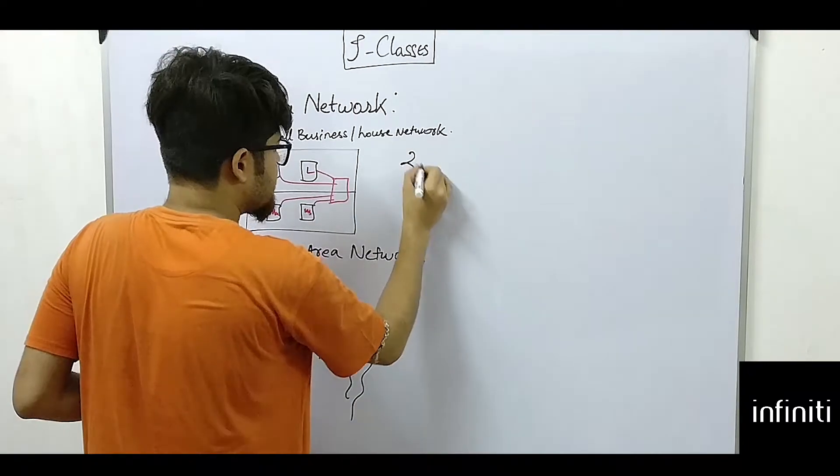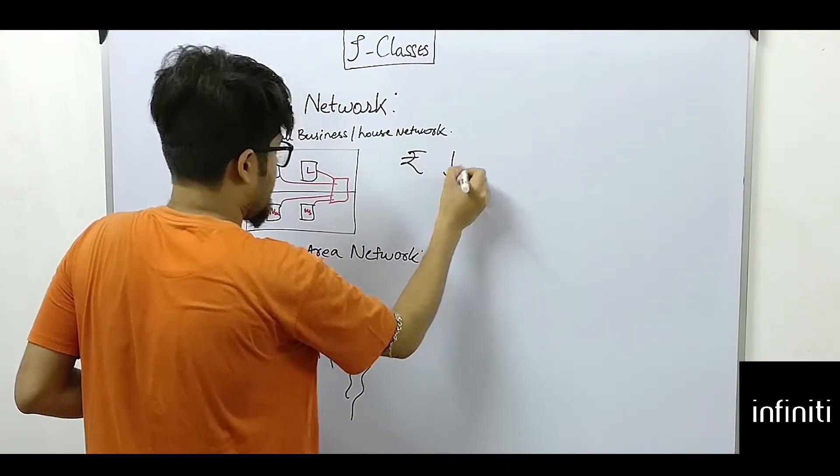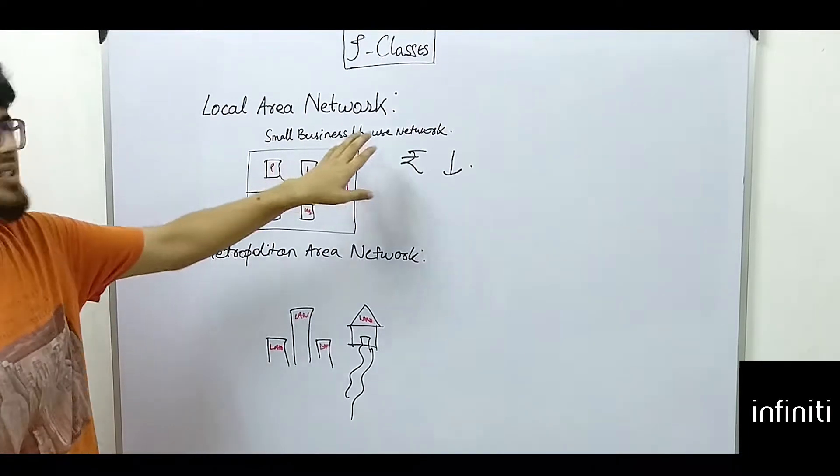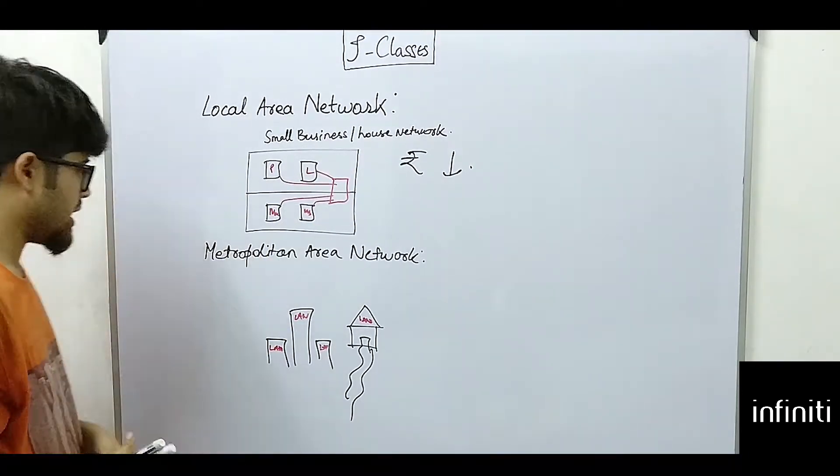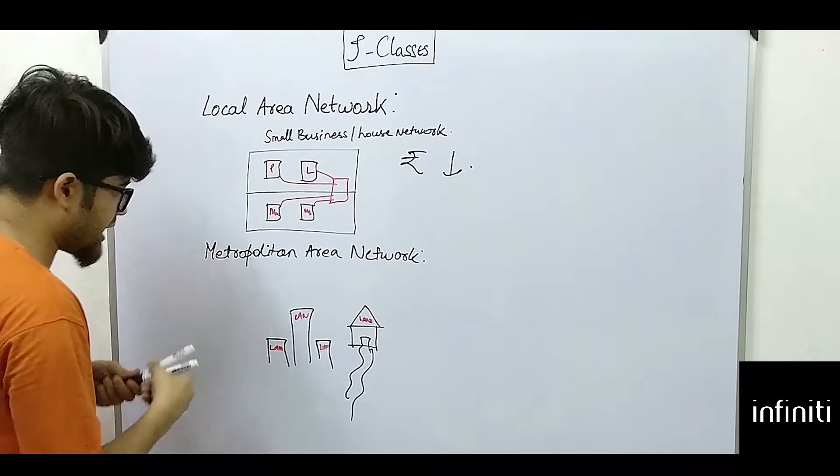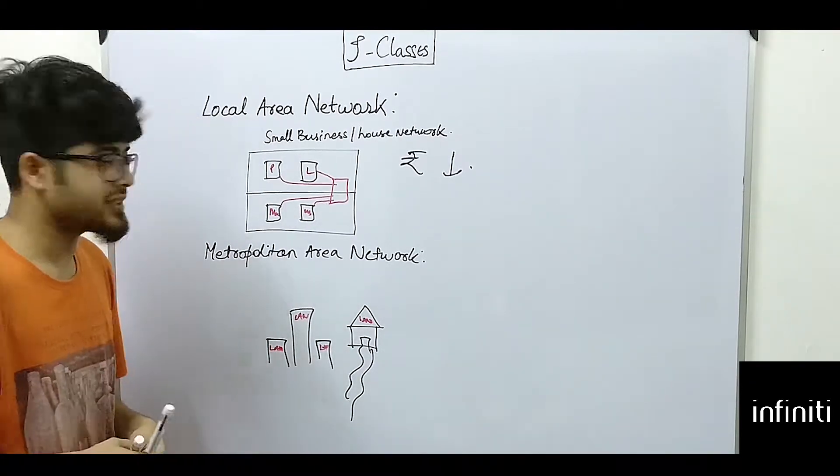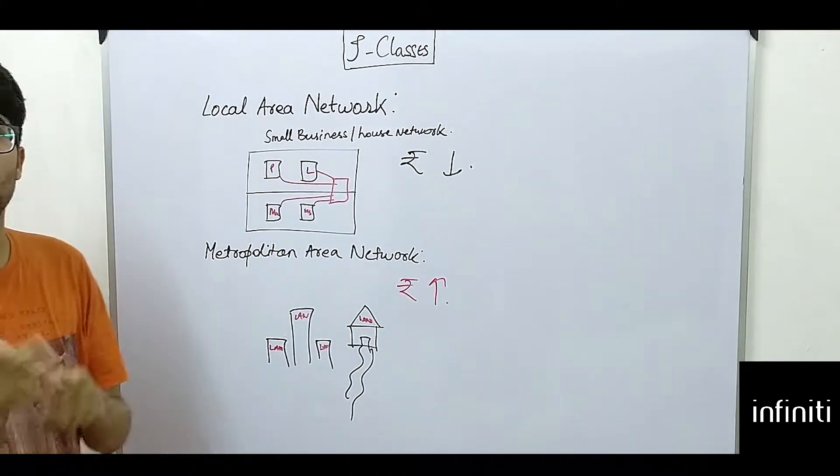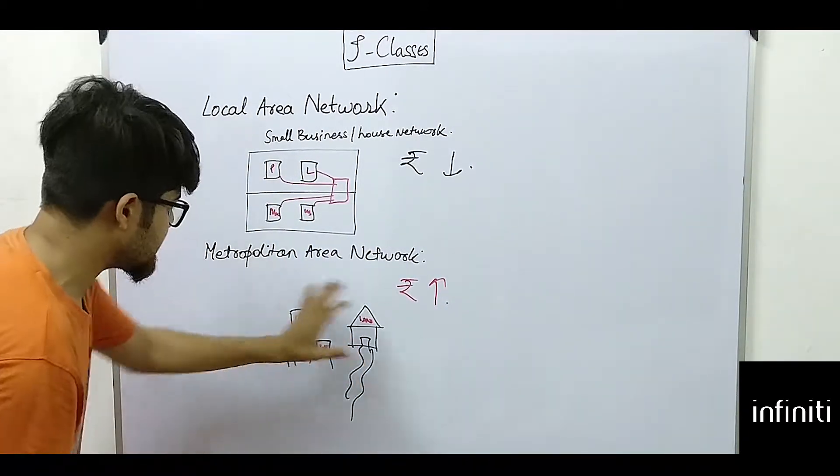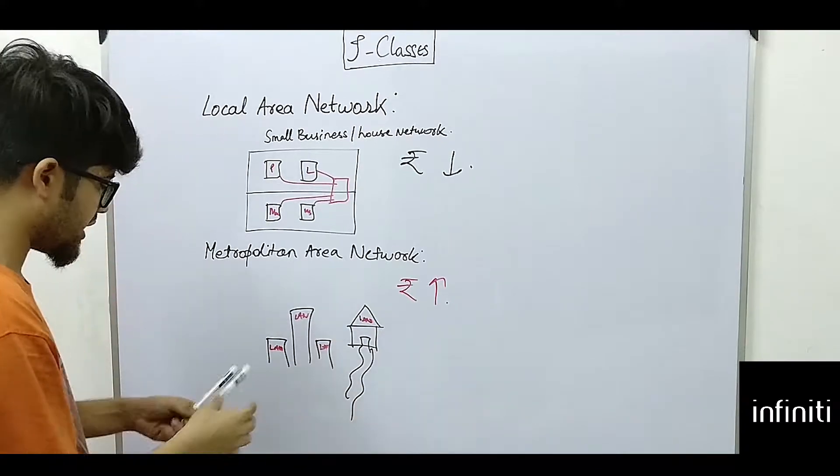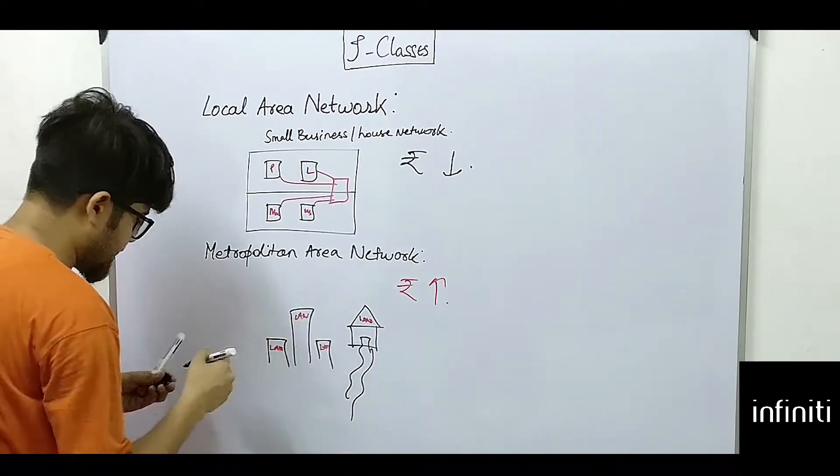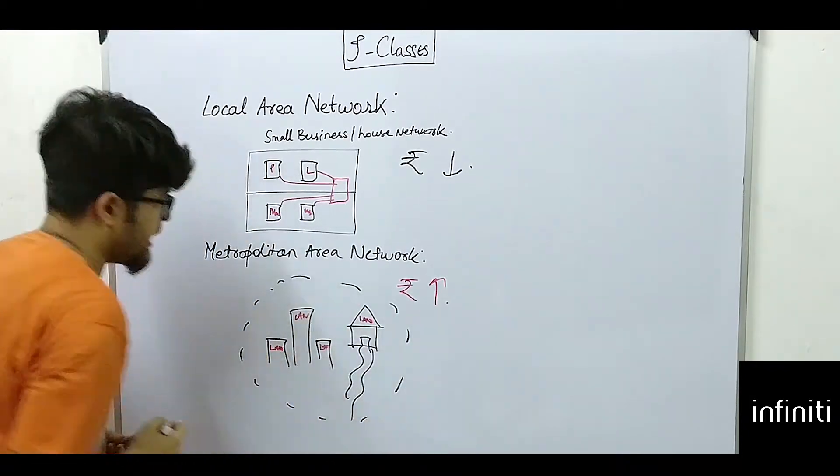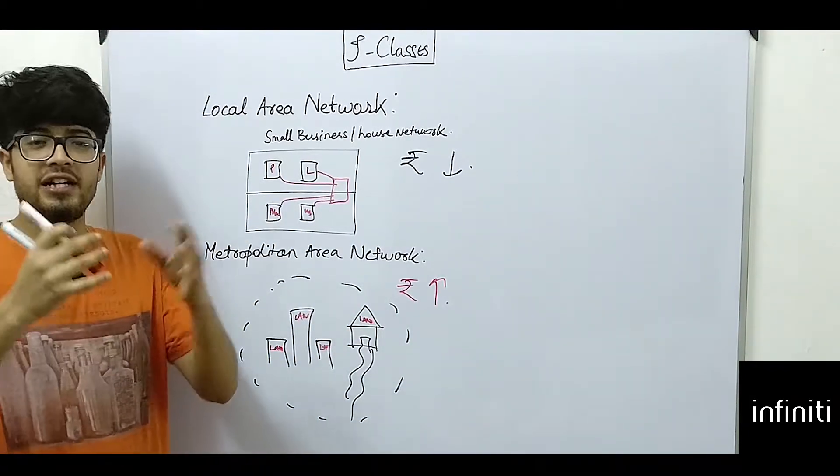So we see that in local area network it is very simple, that means the cost is not that much, though it may be used for private purposes, that is for a small business or house network. We see that the complexity is not that much. In metropolitan area network, the complexity gets a little more, and as well as the price also gets more because there are more networks involved in it. We can see that there are different LANs involved in it, and this when connected each to each other they form what we call as wide area network. So it may be spread over an entire city.